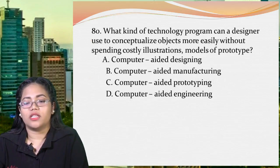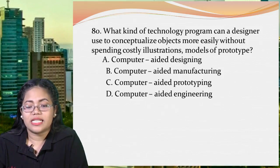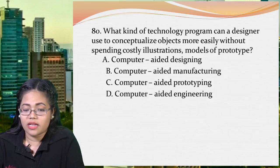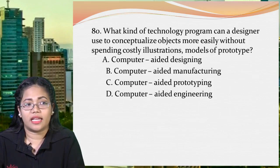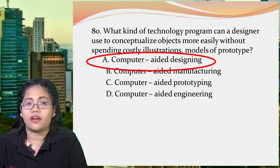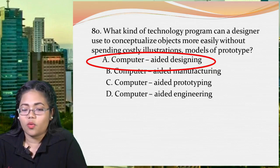Next: what kind of technology program can a designer use to conceptualize objects more easily without spending on costly illustrations, models, or prototypes? A: computer-aided designing, B: computer-aided manufacturing, C: computer-aided prototyping, or D: computer-aided engineering. The correct answer is letter A, computer-aided designing. CAD is software that replaces manual drafting with an automated process. It is commonly used by engineers today — AutoCAD being the most popular — and is used for drafting.